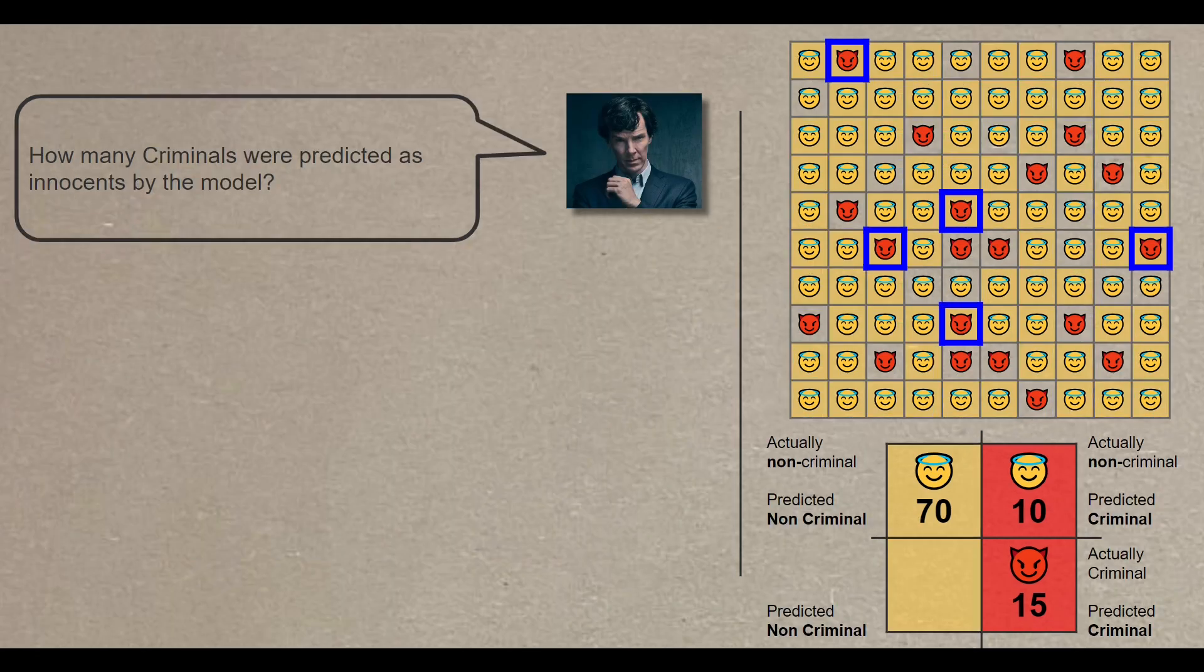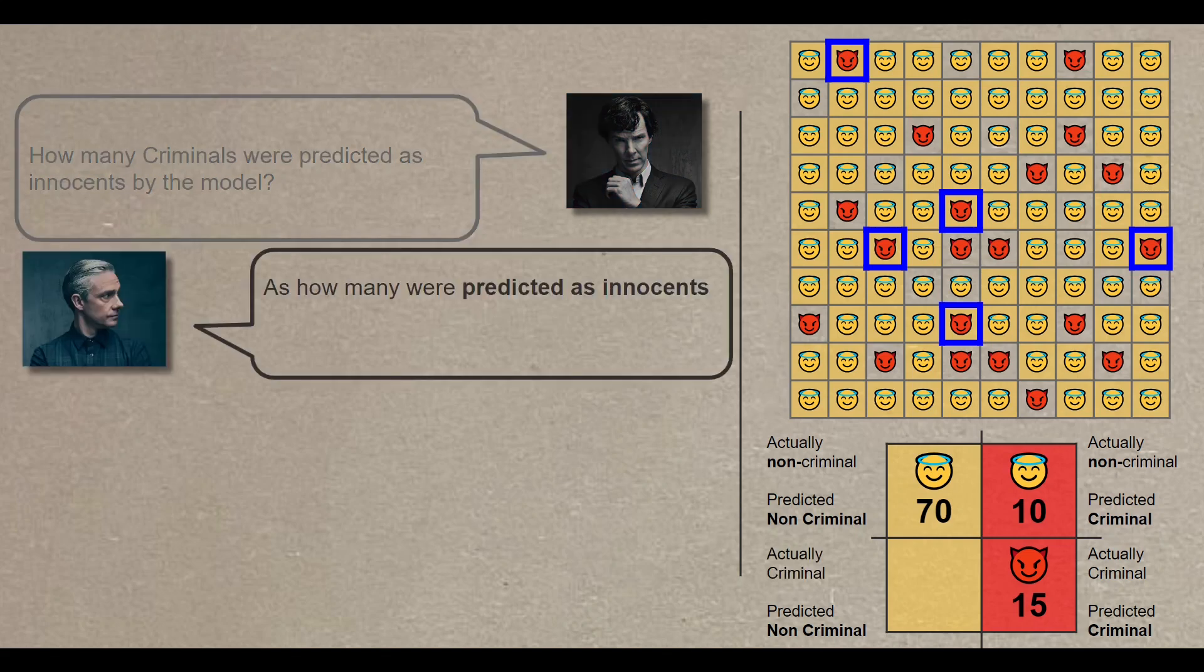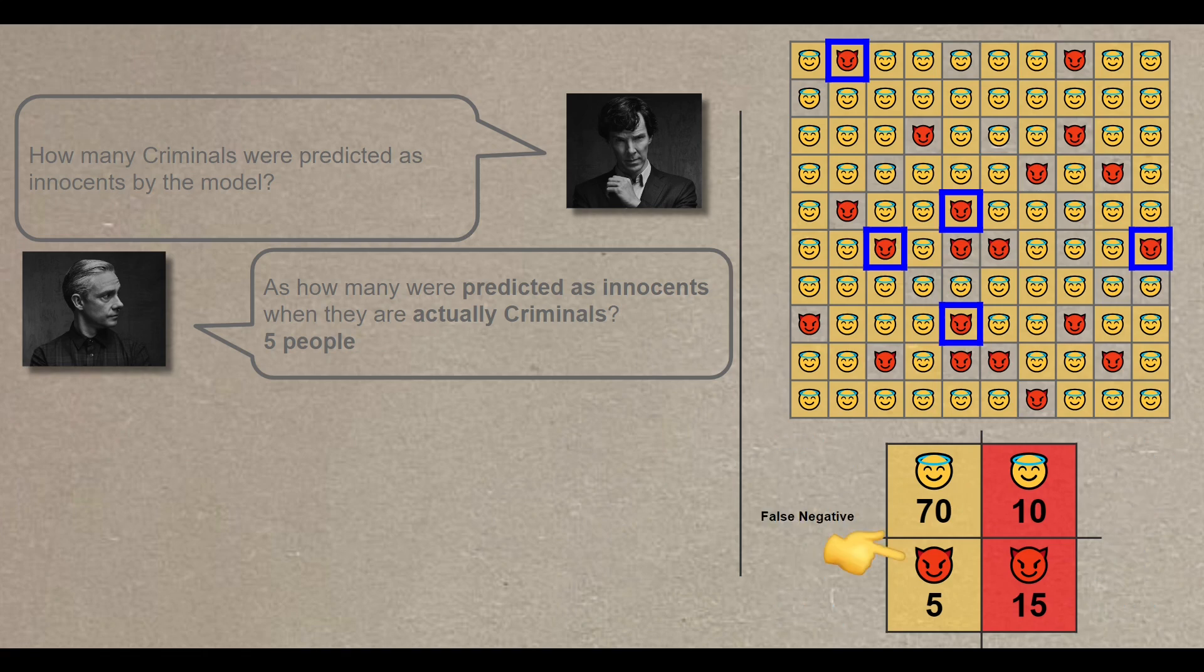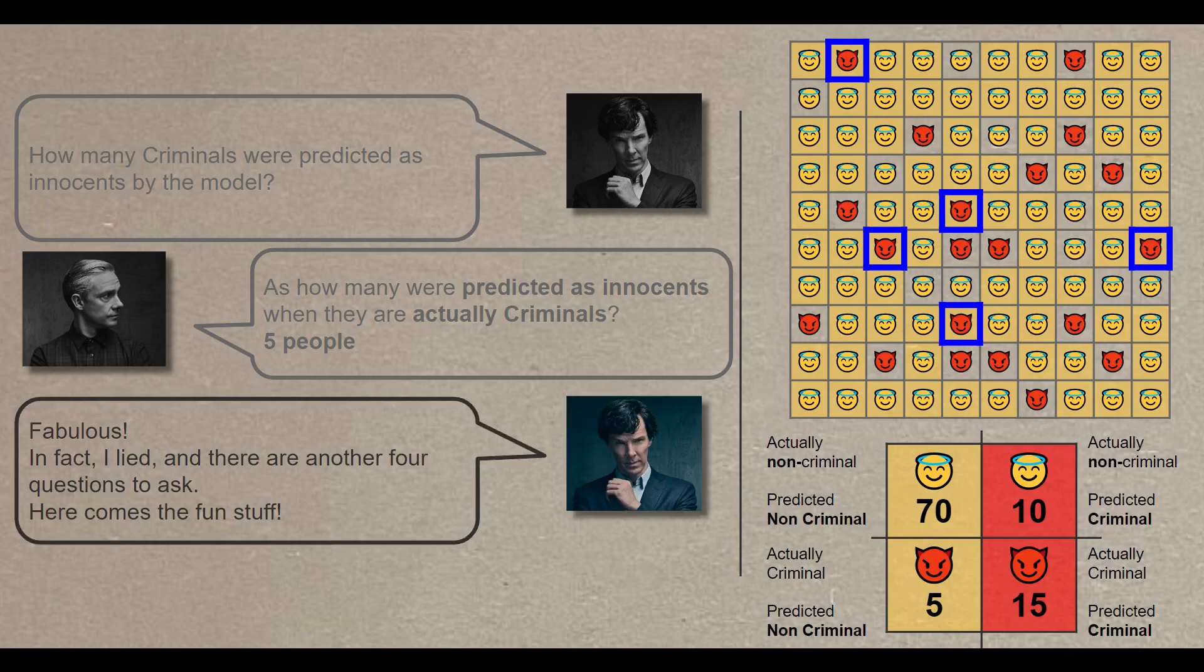One question to go. How many criminals were predicted as innocents by the model? So how many were predicted as innocents when they are actually criminals? That would be 5 people. And this is known as false negative. False because the prediction doesn't align with reality, yellow shade, red emoji, and negative because the prediction negates that the person is a criminal.